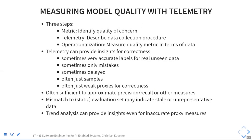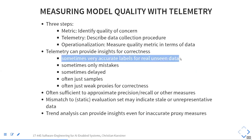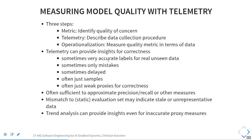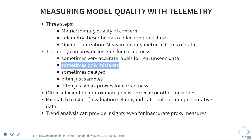Sometimes you get very accurate labels for real unseen data — the housing price example is one: a week or month later you see what the house sold for. Sometimes you only know about mistakes — the Skype example where you report problems, so if users are happy you don't know about this. Sometimes the answers are delayed, as in the housing example: it's very good data, but it only comes a week or month late.